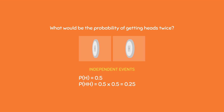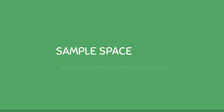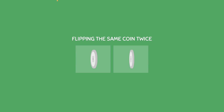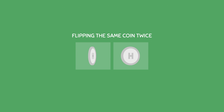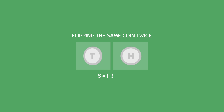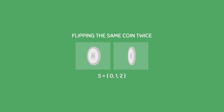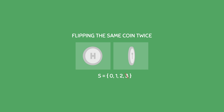Another way of solving probabilities is by creating something called a sample space. A sample space refers to the entire set of possible outcomes. Since we are flipping the same coin twice, the sample space of interest would be observing 0 heads, observing 1 head, or observing 2 heads. Note that it is impossible to observe 3 or more heads because we are only flipping the coin twice.